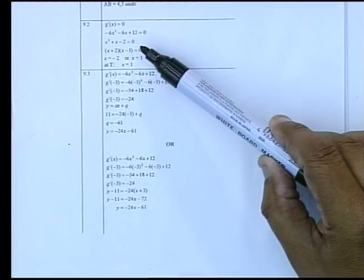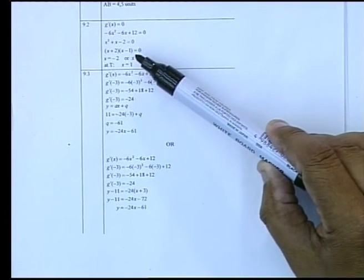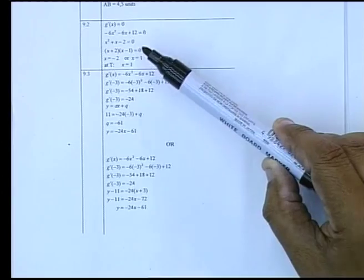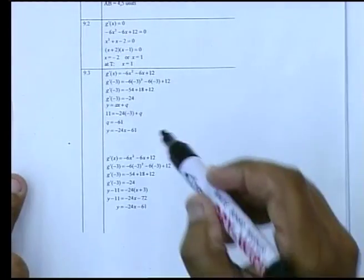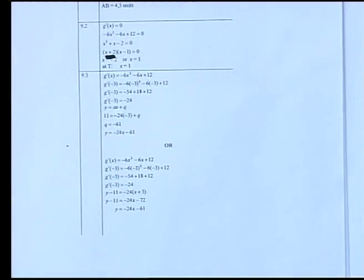You're factorizing that, and you are then finding the factors for that quadratic where obviously you expected that one bracket, x plus 2, to occur.